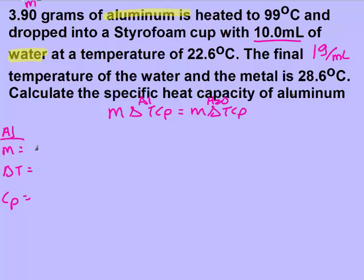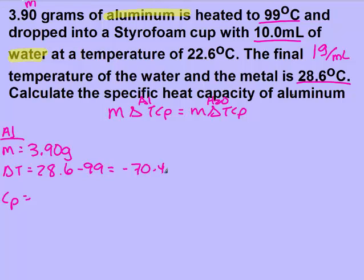From the problem I have the mass of aluminum. My change in temperature: it started at 99 and it's ending at 28.6. So if I did final minus initial, notice it gives me a negative sign — that's why one side is always going to be negative to counteract that negative. If I just did 99 minus 28.6, I wouldn't have had a negative and I wouldn't have had to worry about the negative in the equation. Remember though, if you're solving for any final or initial temperature, you will need to make sure you're doing final minus initial.